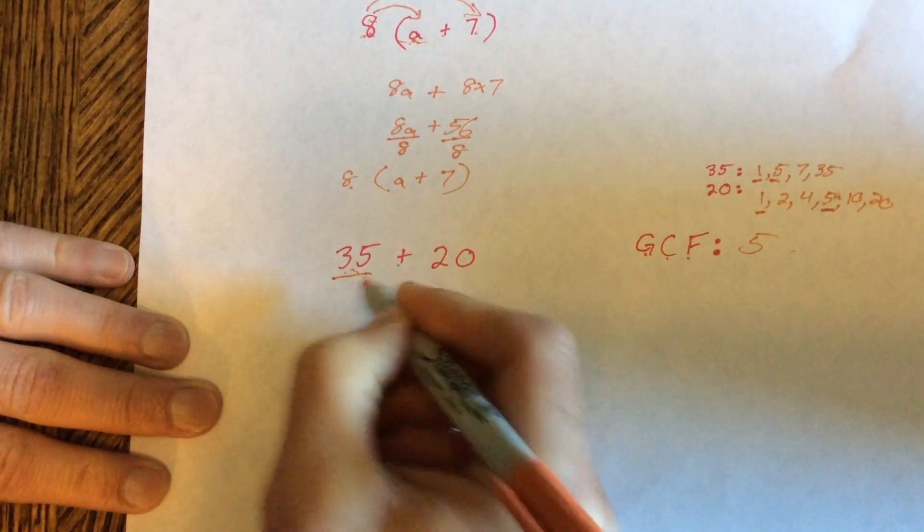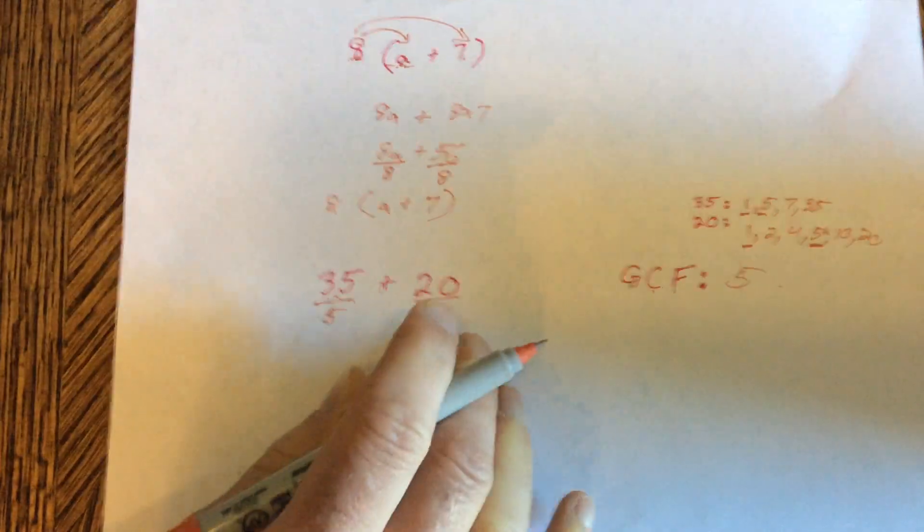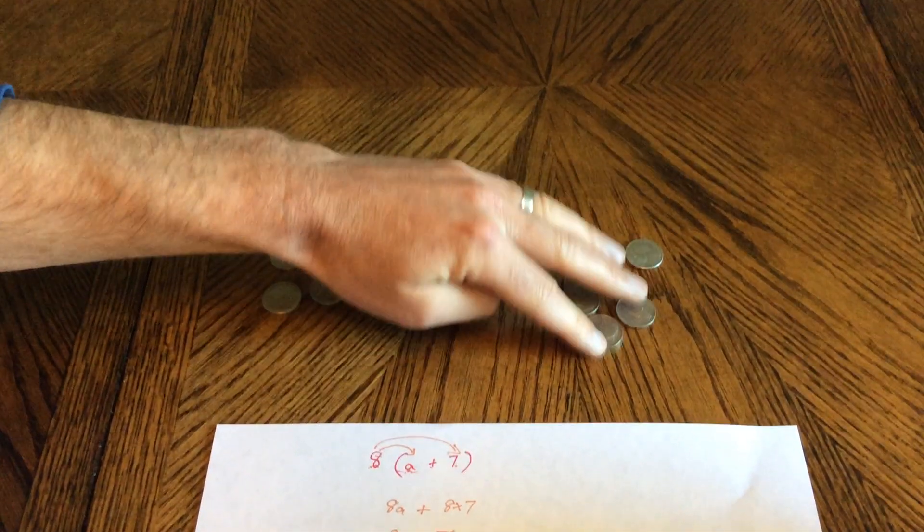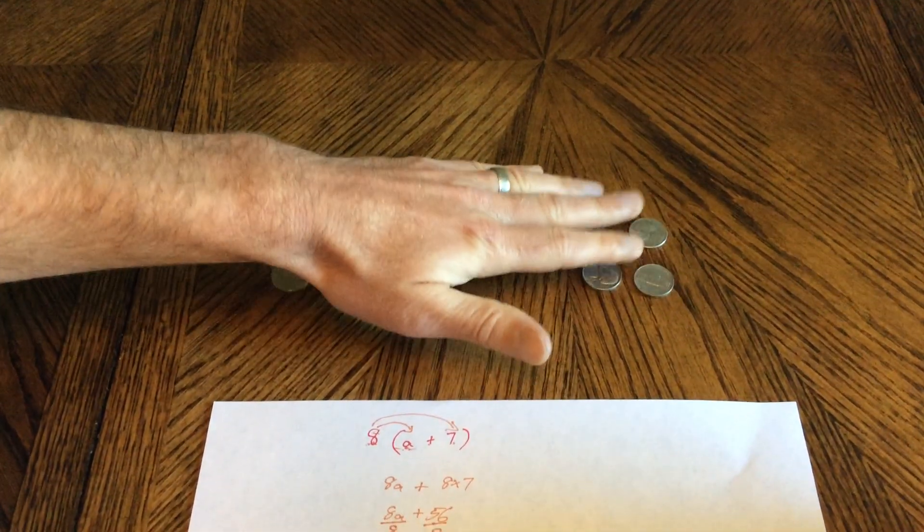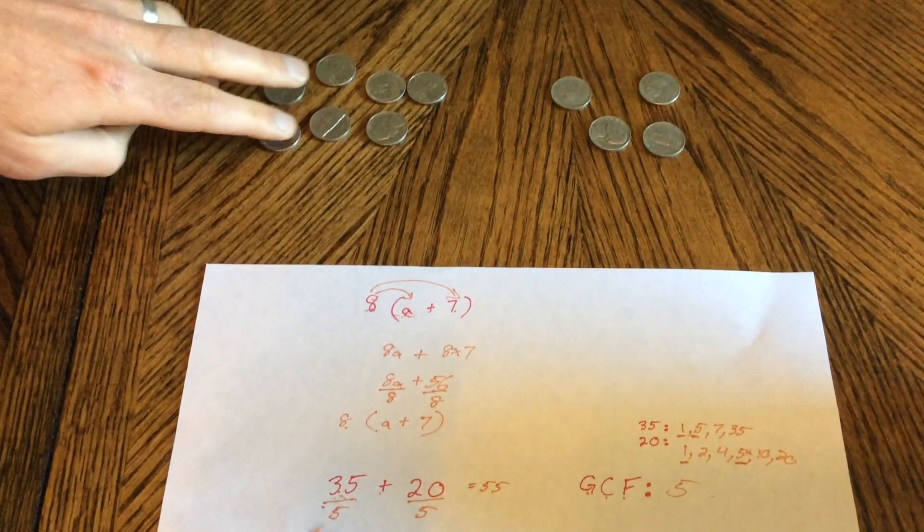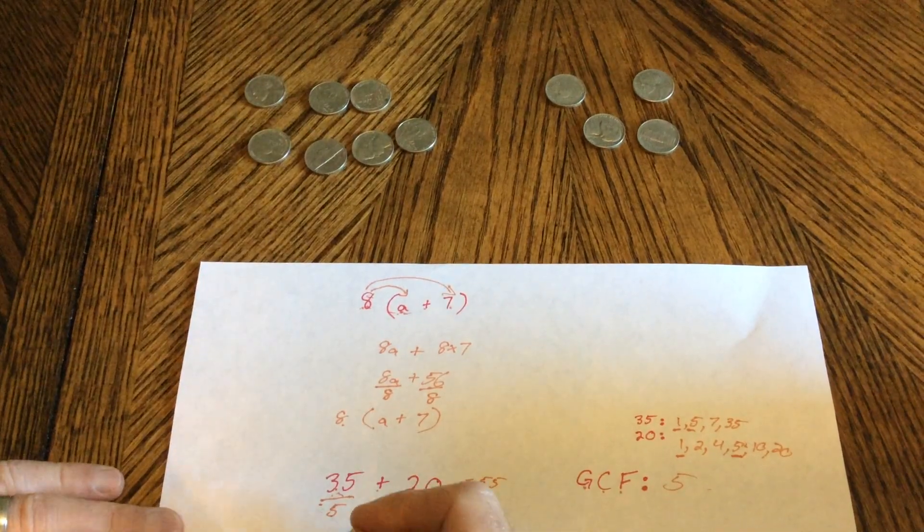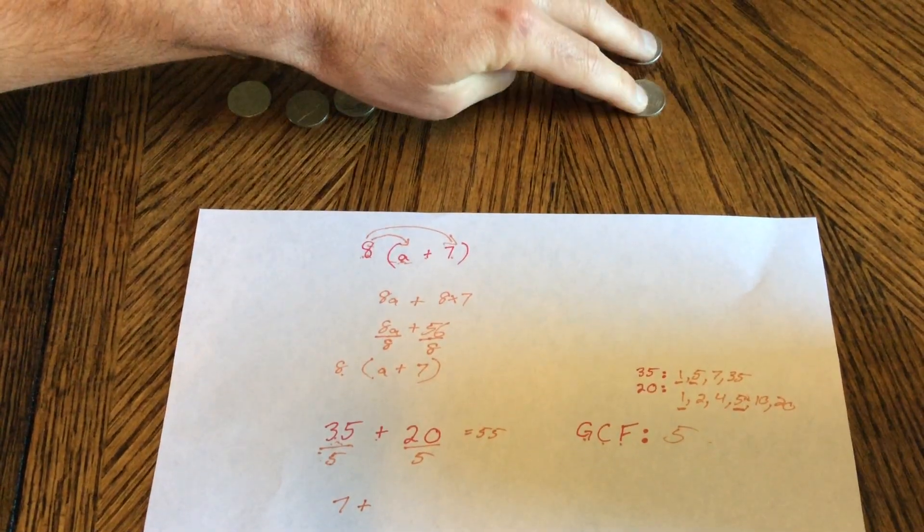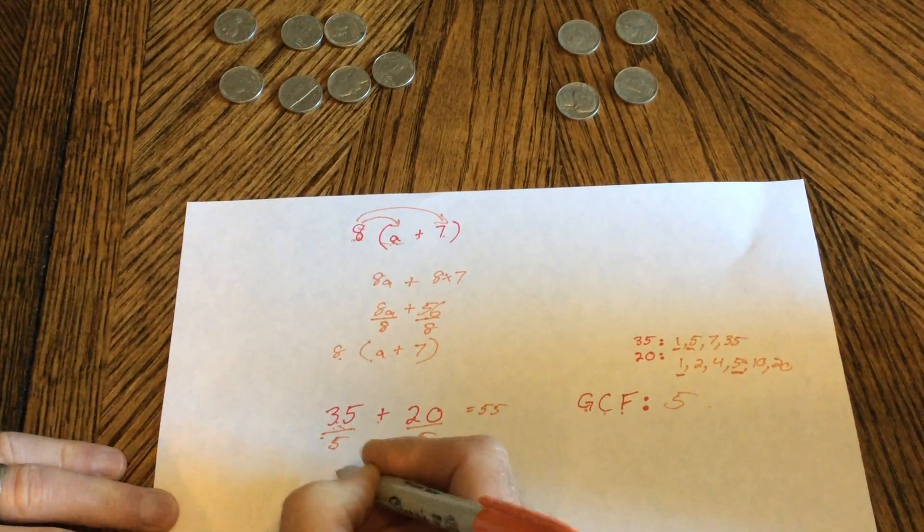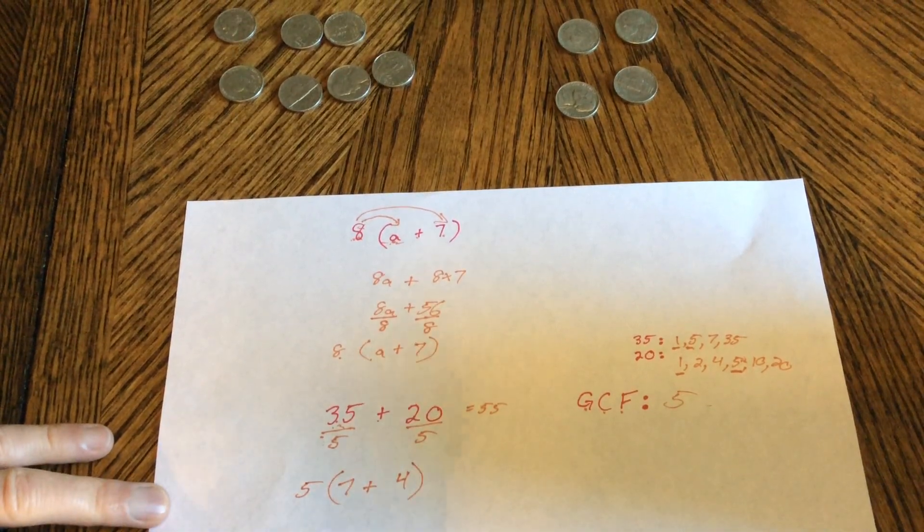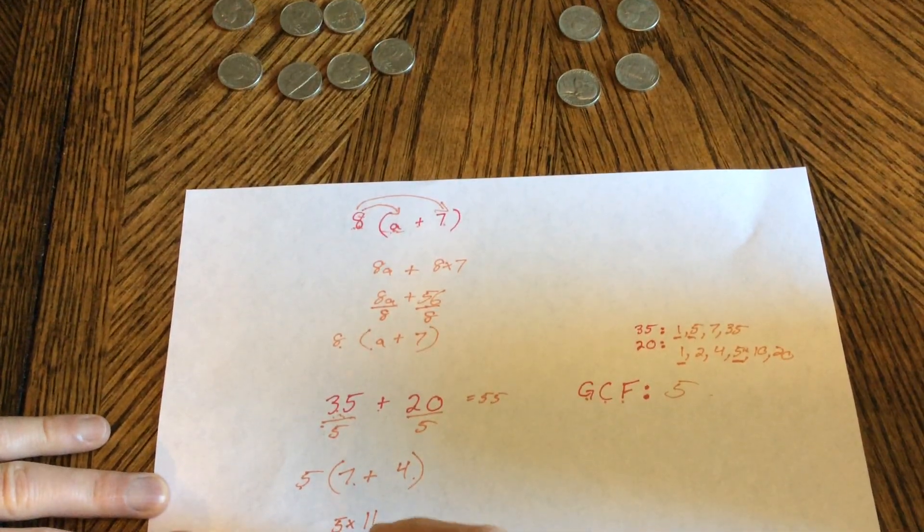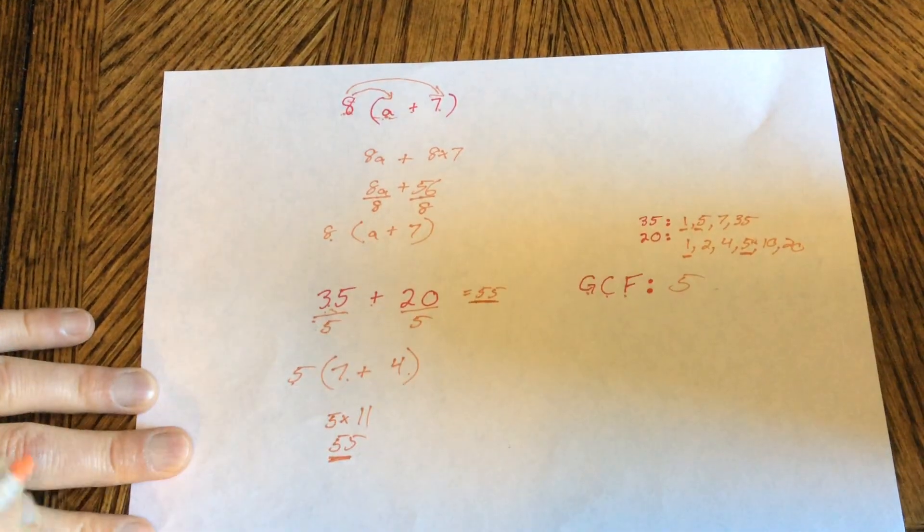So we're going to divide 5 out of both of these. Let's look at it up here with an example. Here I have 35 cents. Here I have 20 cents. So if I'm doing 35 cents plus 20 cents, I could just do 35 plus 20, which is 55. What I also could do though is I could divide 5 out of both of them. So 35 divided into 5 gives me 7 nickels. Plus over here I had 20 cents divided into nickels is 4 nickels. So 35 divided by 5 is 7. 20 divided by 5 is 4. And we know they're each worth 5 cents. So that's what we have. 5 times 7 plus 4. 5 times 11. 5 times 11 is 55. That is the same answer as that.